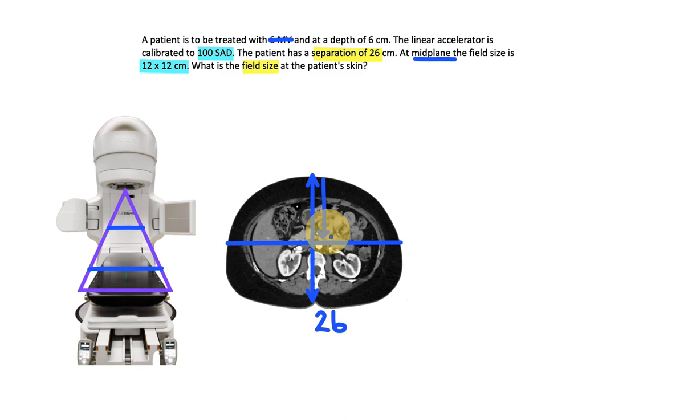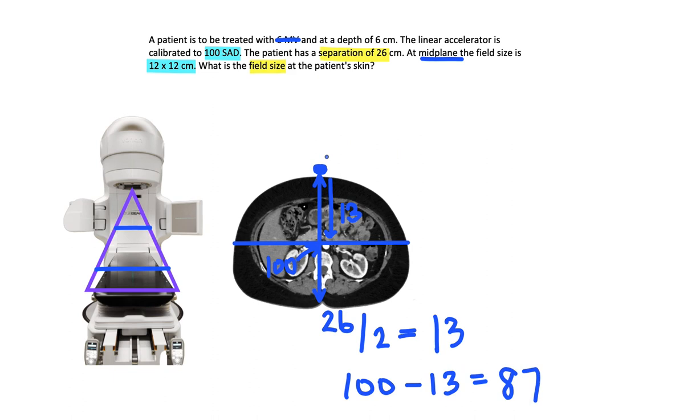To find this distance, we're going to take 26 and divide it in half because we're treating at midplane or in the middle. Once we do that, we'll get 13. So this distance is 13. The linear accelerator is calibrated to 100 SAD, and this is our isocenter where we are treating. So this distance here is 100. In order to find our SSD, we will take 100 and subtract 13, which gets us 87.